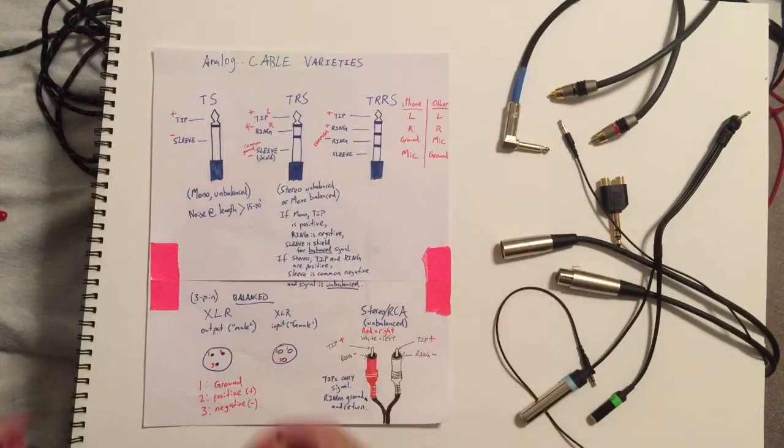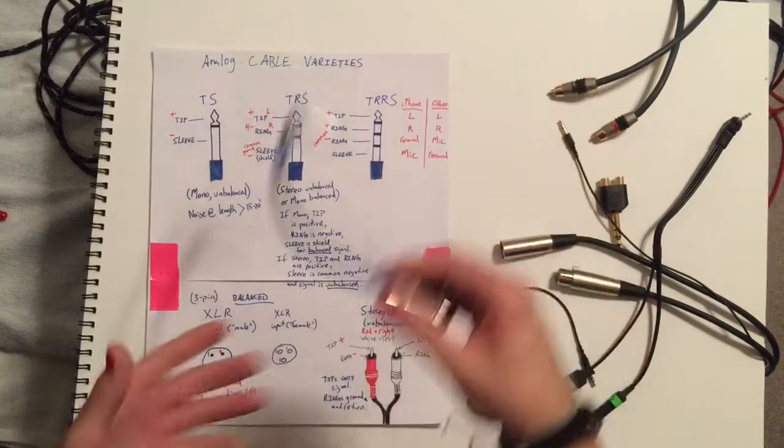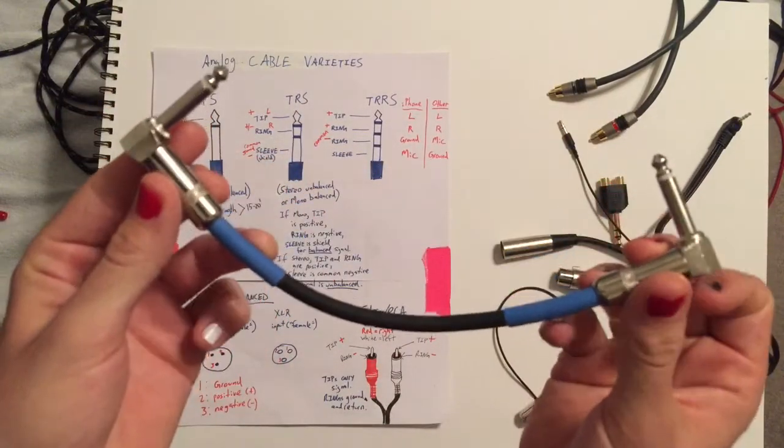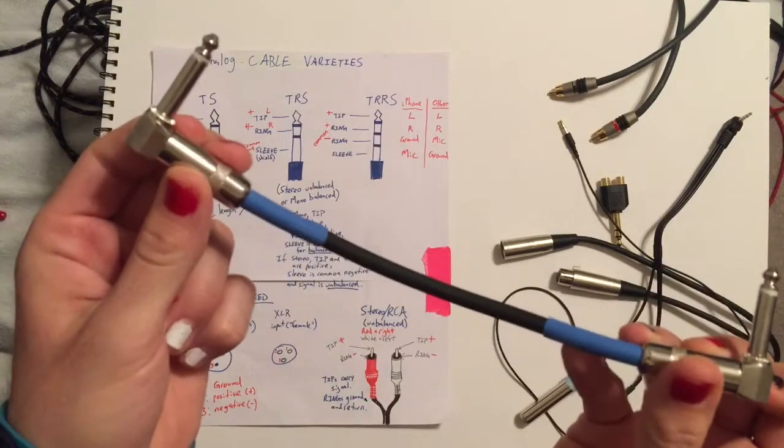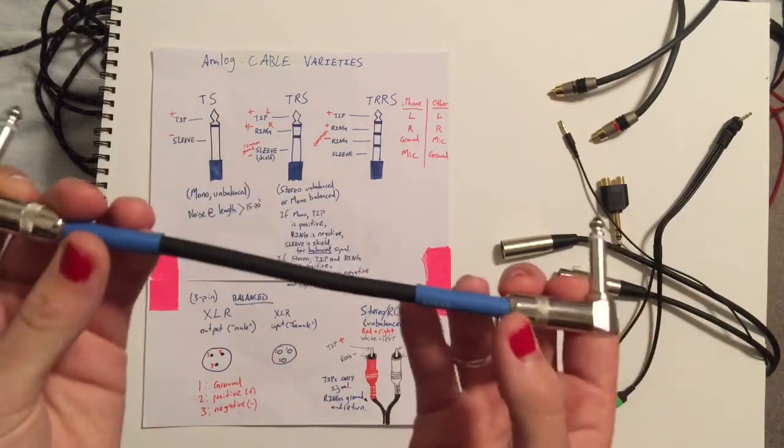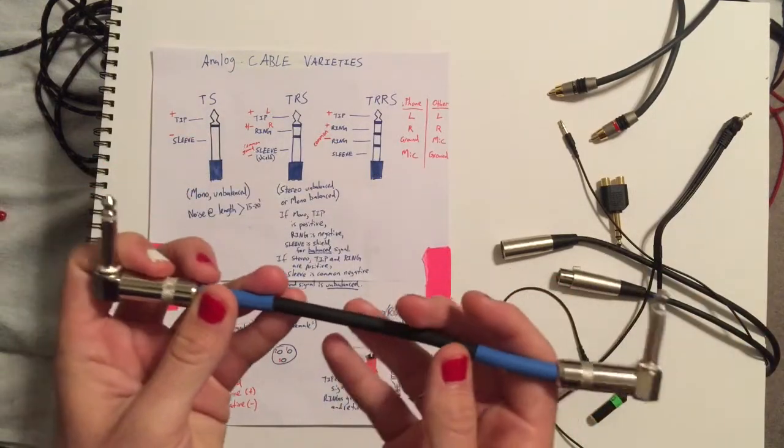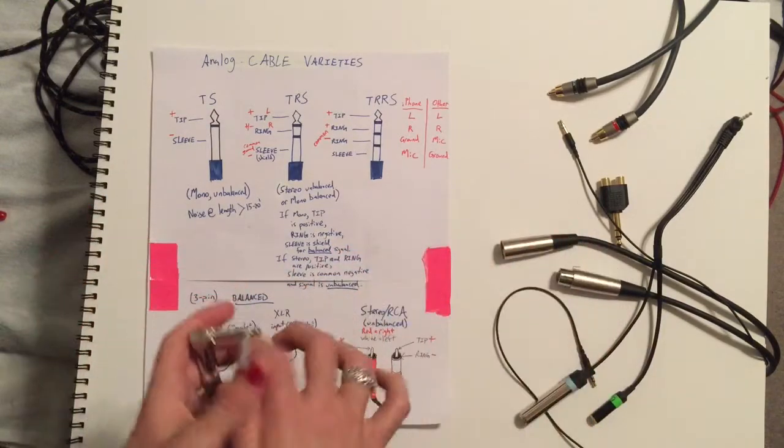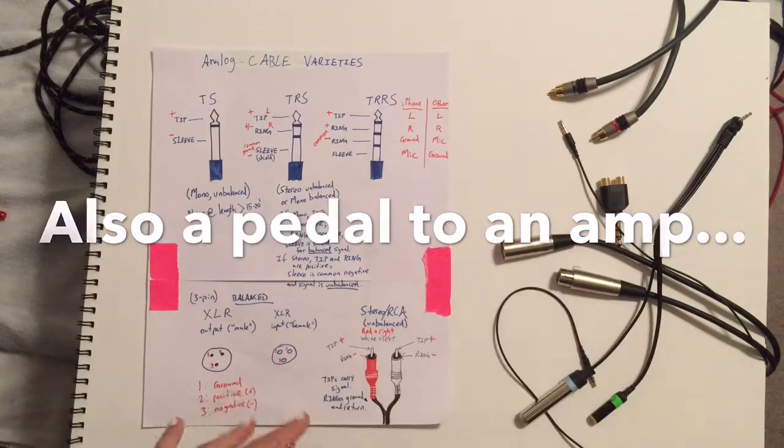So we'll start with the TS which stands for tip and sleeve. Here's an example of that. It's a quarter-inch connector that would connect two guitar pedals together in a chain of effects. You could also use a TS cable to connect a guitar to a pedal or a guitar to an amp. They're usually used for instruments.